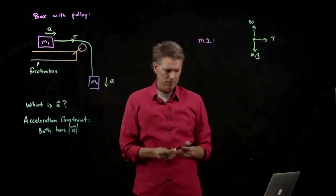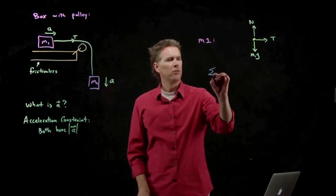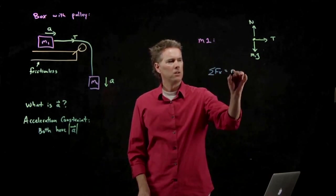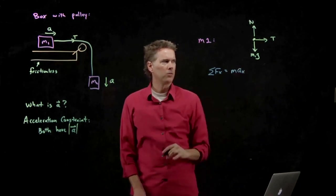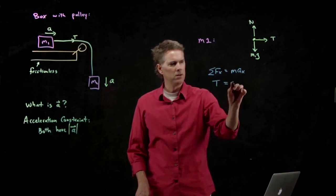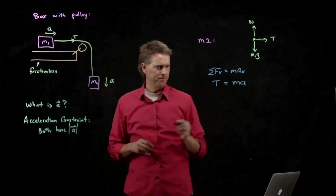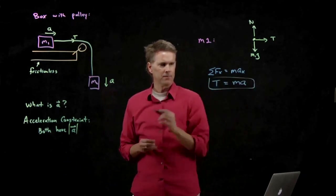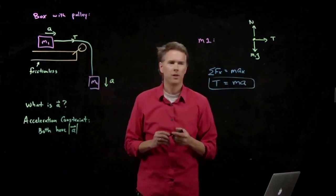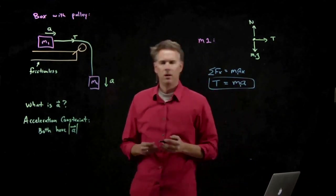So now you can write down Newton's second law for M1. Sum of the forces in the x direction equals the mass times the acceleration in the x direction. We only have one force. It's the tension. The acceleration, we said, is just A. So what's the tension in the rope? It's MA, and this is M1 times A.